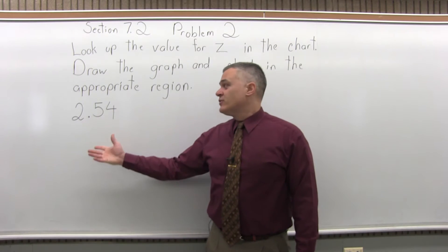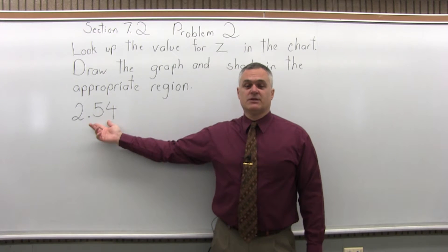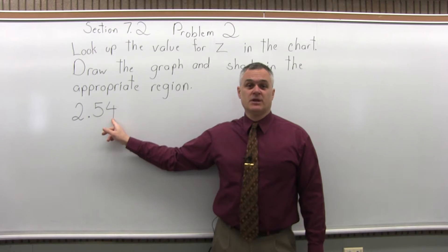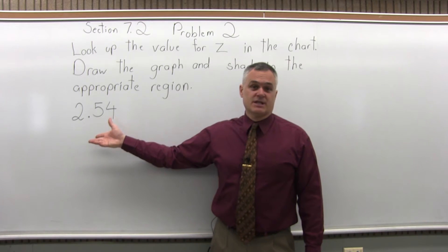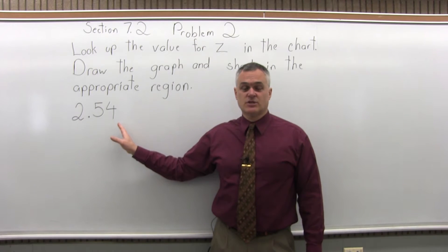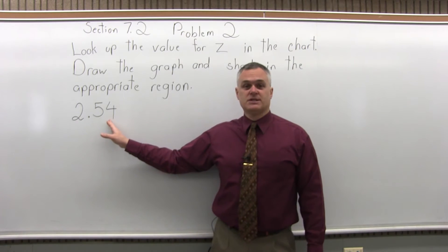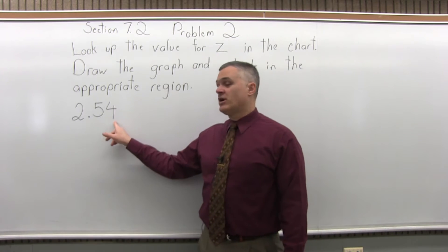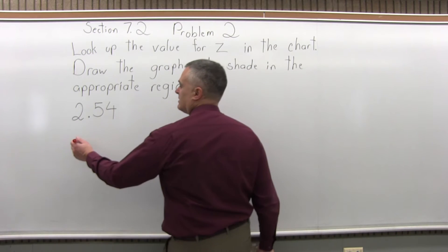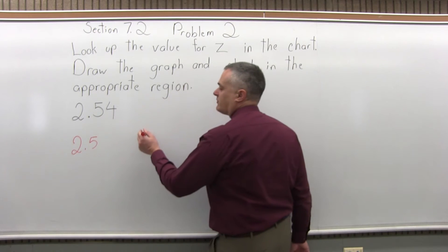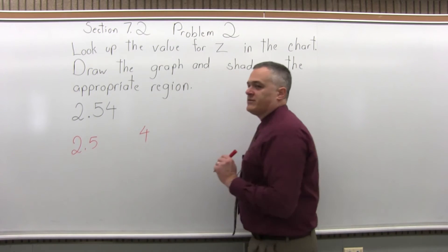There's a four-step process to look this up in the chart. Step 1 is write the number so that it has two places after the decimal. This one already has two places after the decimal. Sometimes you have to fill in zeros, or round it off a little bit, but we have step 1 all set. Step 2, split the number into two parts by pulling off the rightmost digit. So, we'll have 2.5, the rightmost digit is the 4, it'll come off to the side.